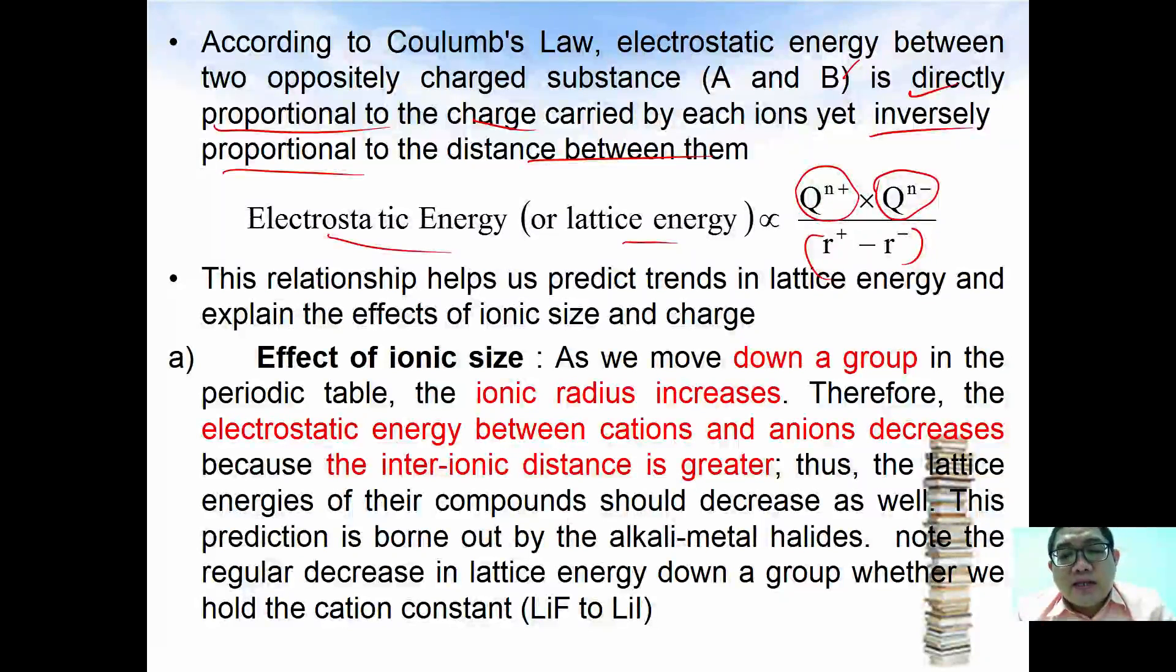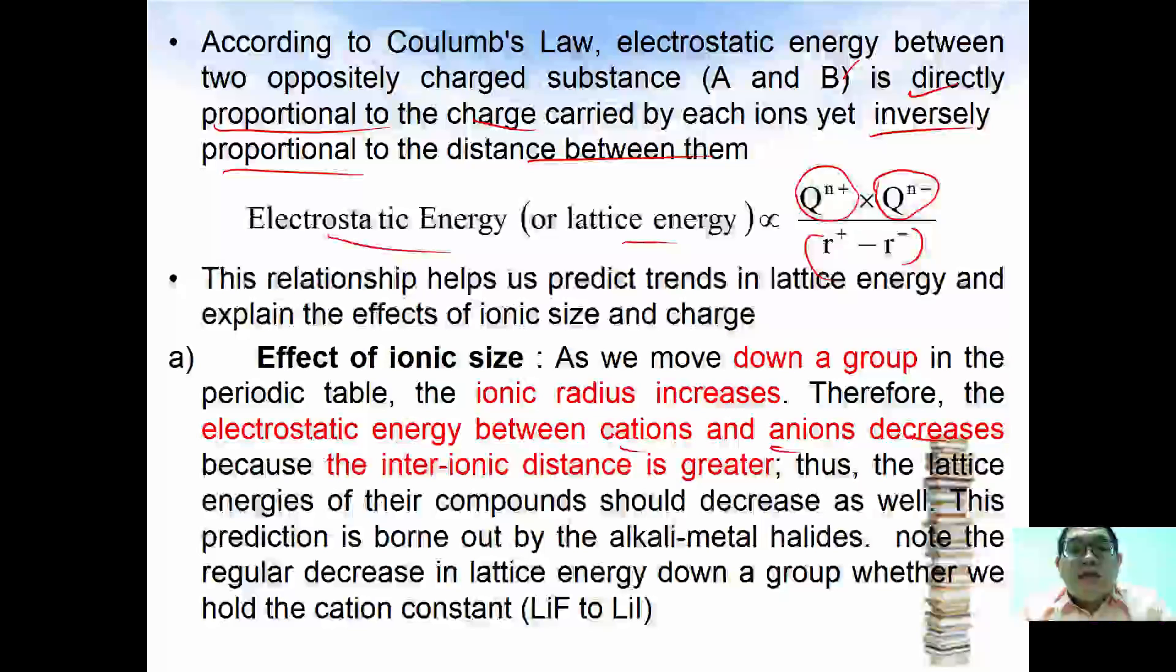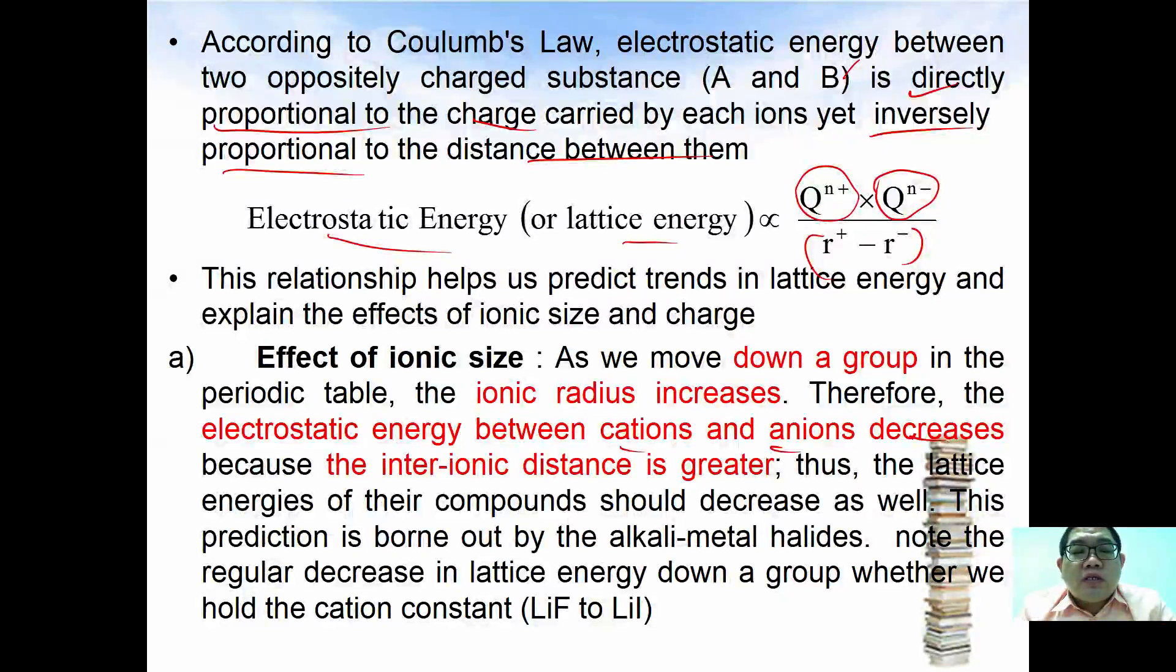This relationship helps us predict the trend of the lattice energy and explain the effect of ionic size and charge. In general, as we move down a group the ionic radius increases, therefore electrostatic attraction between the cation and anion decreases.